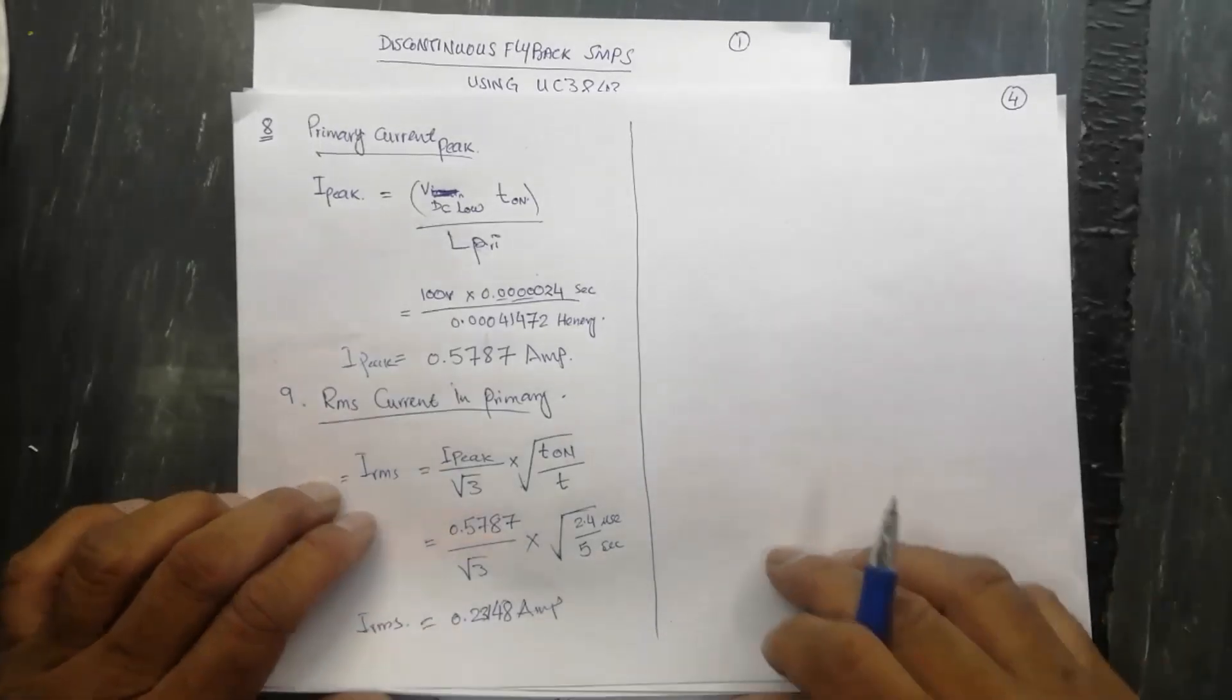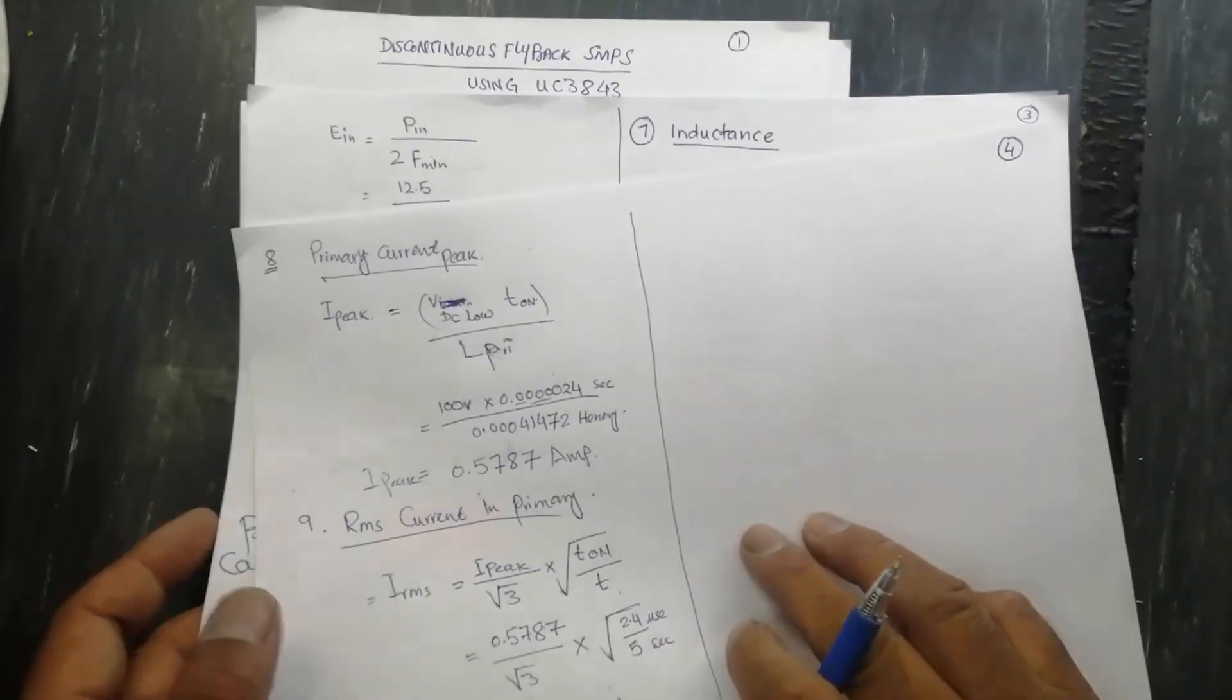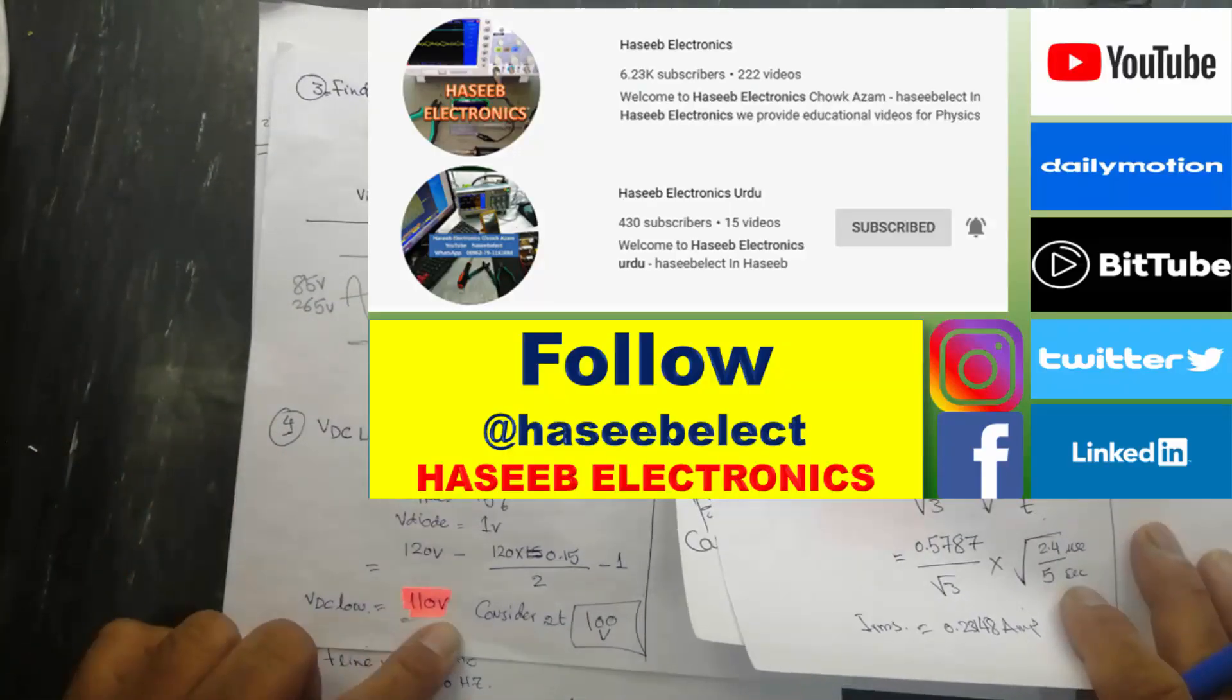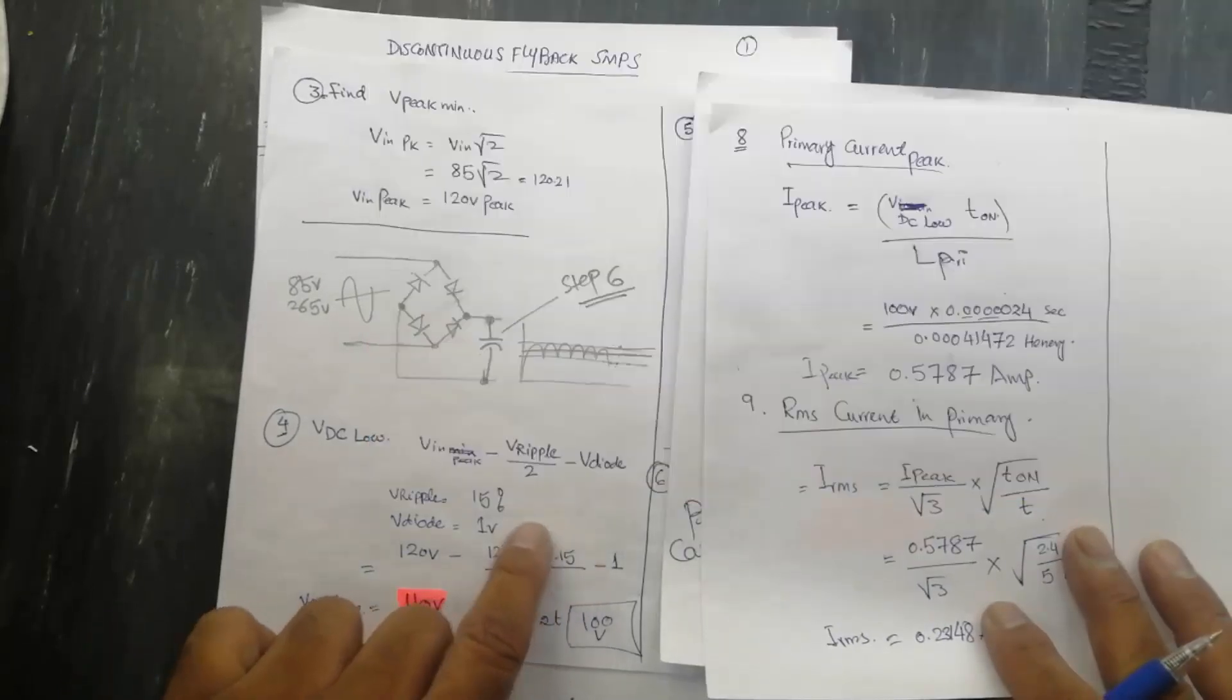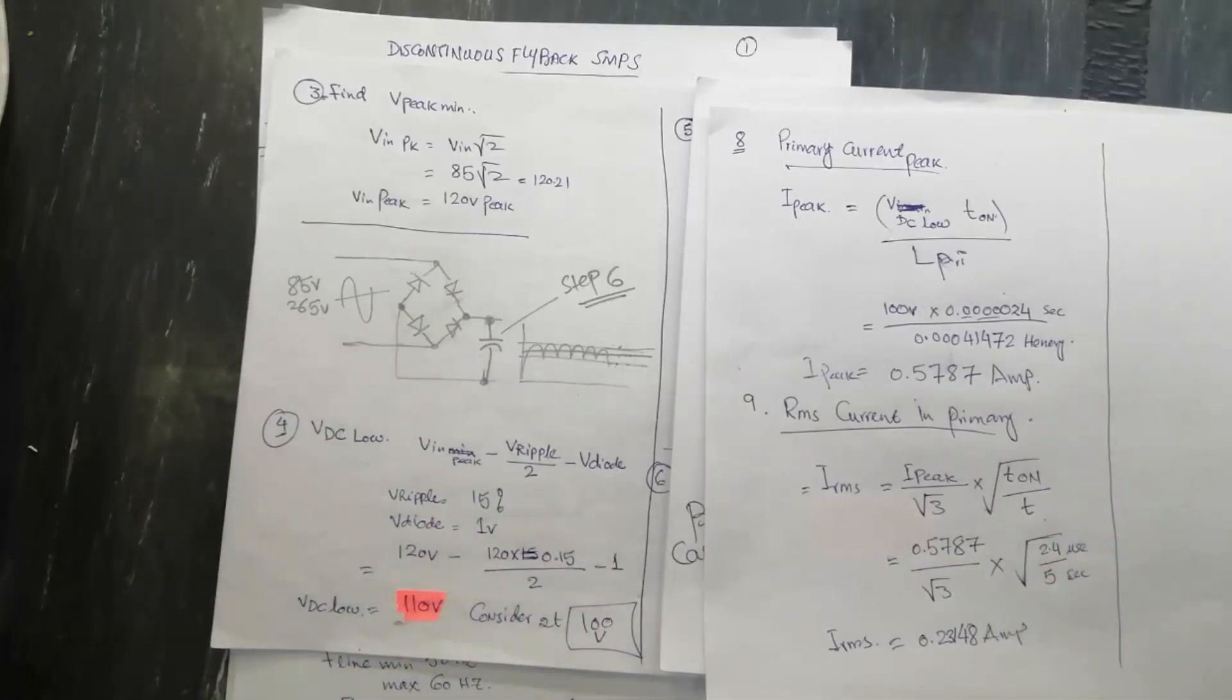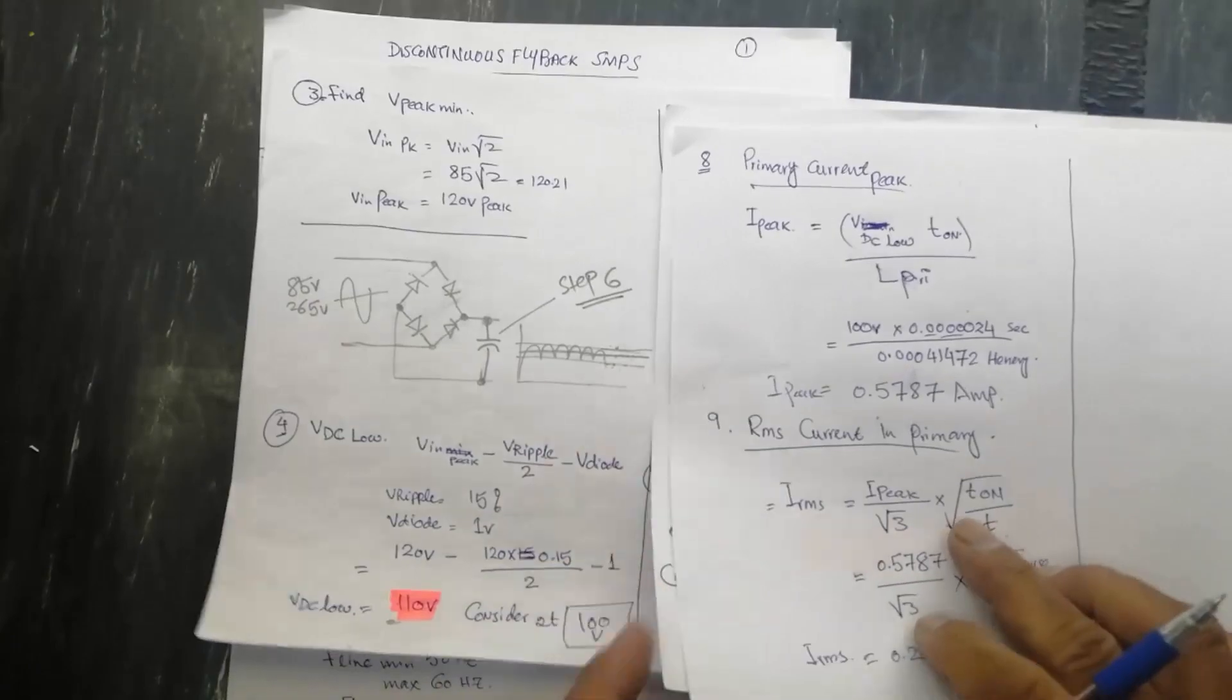Assalamu alaikum warahmatullahi wabarakatuh friends. In my last video on building and calculating the design of discontinuous flyback, I received one comment from one of my friends about the ripples. He had some doubt about why I was saying it is 18 volt ripples, so we will see now what the problem is.